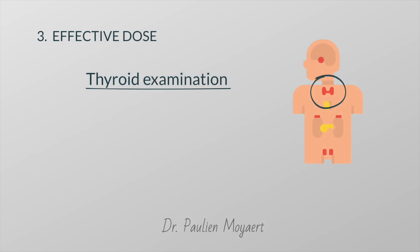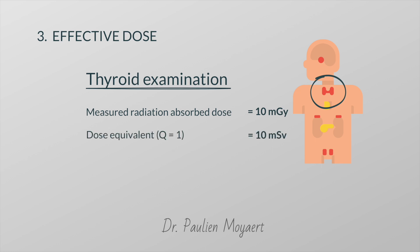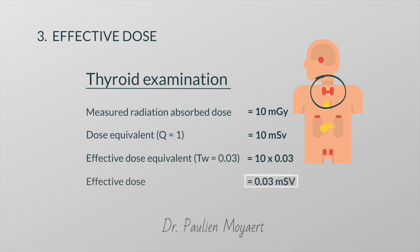Here's an example to illustrate this. Let's say it is necessary to undergo a thyroid examination. The measured absorbed dose is 10 mGy. The equivalent dose will be the same, only the units are different, because all radiation used in diagnostic medicine has the same low harm potential. However, the effective dose will be different — we multiply 10 by 0.03 to get our effective dose.